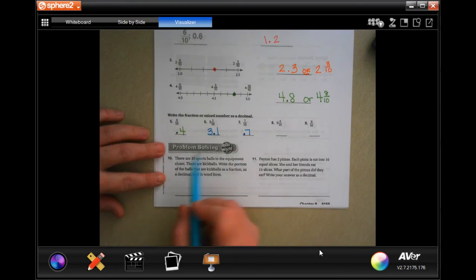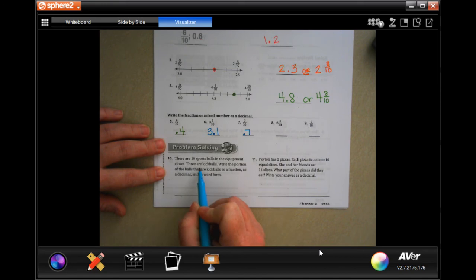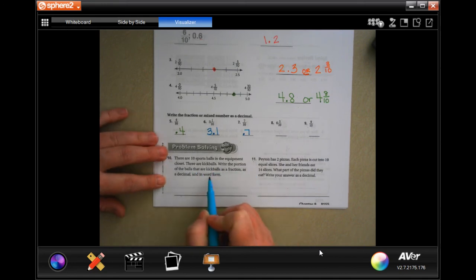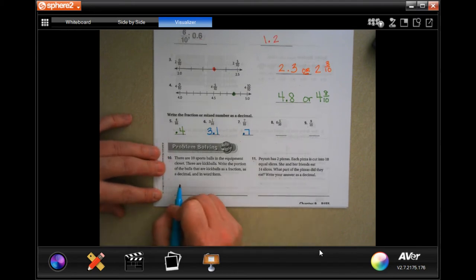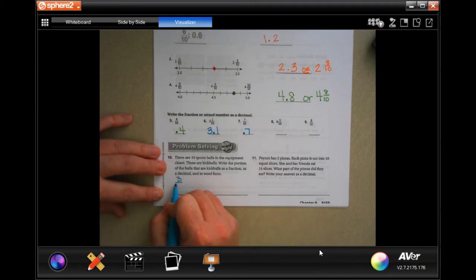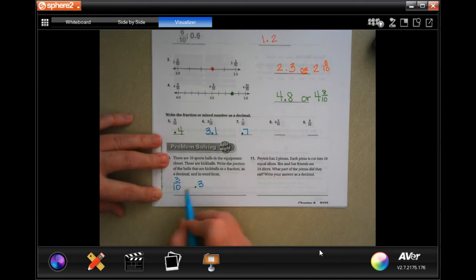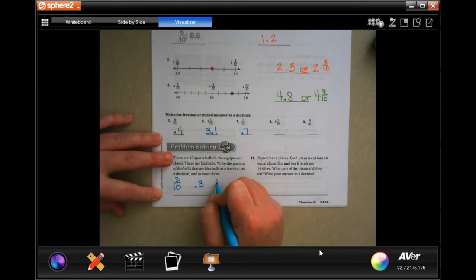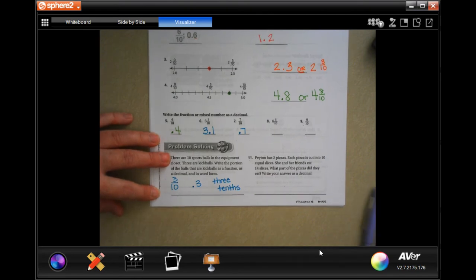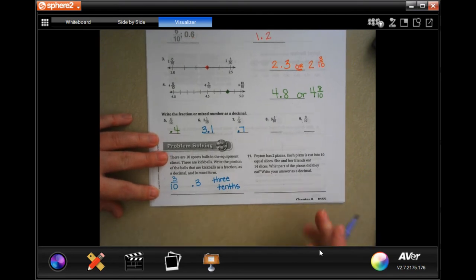There are ten sports balls in the equipment closet. Three are kickballs. Write the portion of balls that are kickballs as a fraction, as a decimal, and in word form. So three out of the ten, there's our fraction, which means there's our decimal. And when we say either one of these, we say three tenths.